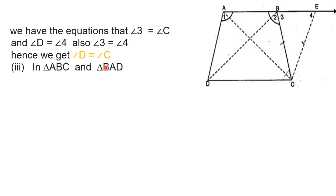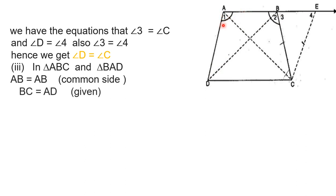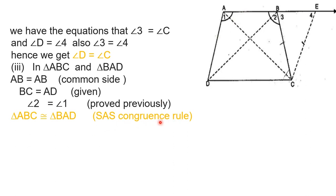For the third part, we have to prove triangle ABC is congruent to triangle BAD. In triangles ABC and BAD, side AB is common; angle 1 equals angle 2 (i.e., angle A equals angle B, already proved); and AD equals BC (given). This gives us side-angle-side. So by the SAS congruence rule, triangle ABC is congruent to triangle BAD.